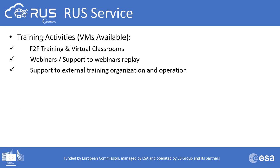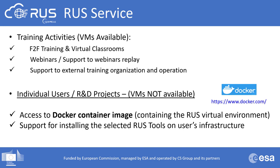RUSS is divided into two categories: training activities and individual users and R&D projects. Training activities include face-to-face trainings, virtual classrooms, webinars, support to webinar replay, and support to external training organizations. Participants of training events can take advantage of a limited number of remote desktop virtual machines accessible from any computer. For individual users and R&D projects, RUSS Copernicus provides support through a Docker container image containing the complete RUSS virtual environment and tools, provided upon request.